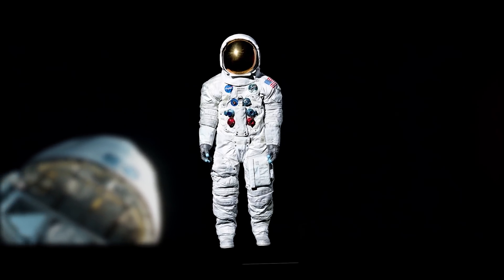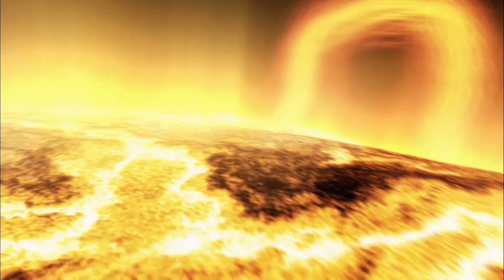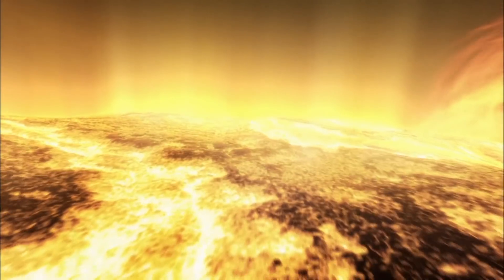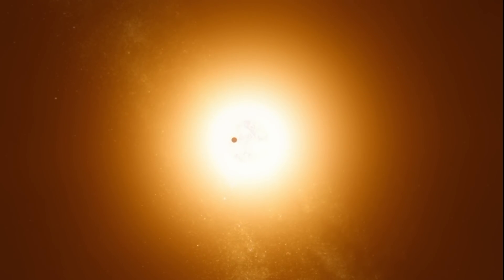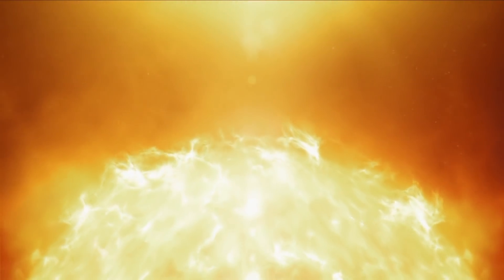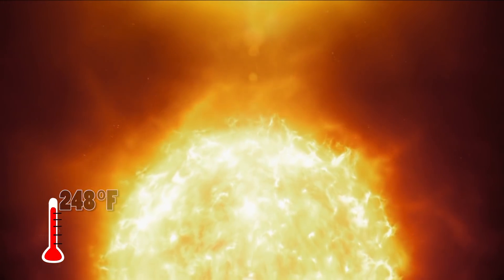A standard spacesuit will protect an astronaut by temperatures of up to 248 degrees Fahrenheit. Still great in most instances, but extremely poor for trying to touch the Sun. The Sun is about 93 million miles away from Earth, and it's at about 3 million miles from the surface that temperatures would scorch up to above 248 degrees Fahrenheit.